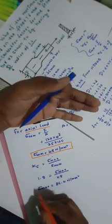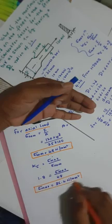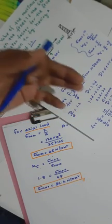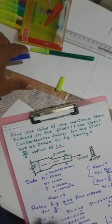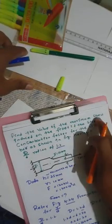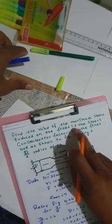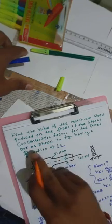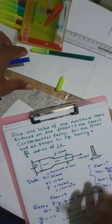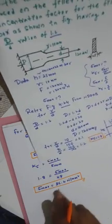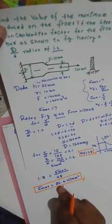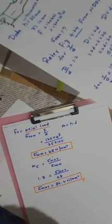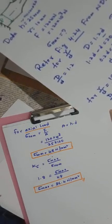Simplifying, sigma maximum equals 1.8 × 48 equals 86.4 Newton per mm². This is the maximum stress induced in the fillet. So sigma max equals 86.4 N/mm². Thank you.